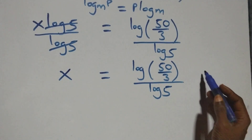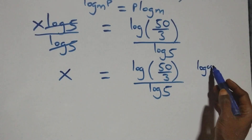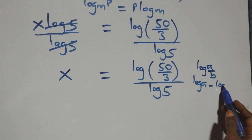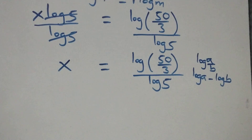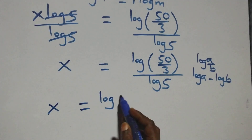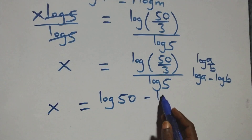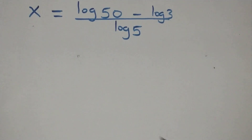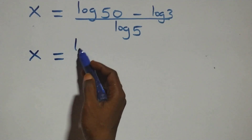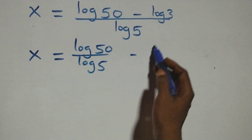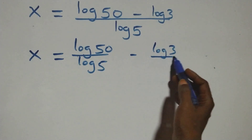This follows the log quotient rule: log(a/b) can be written as log a minus log b. So x equals (log 50 minus log 3) over log 5. We separate this into two fractions: x equals log 50 over log 5 minus log 3 over log 5.